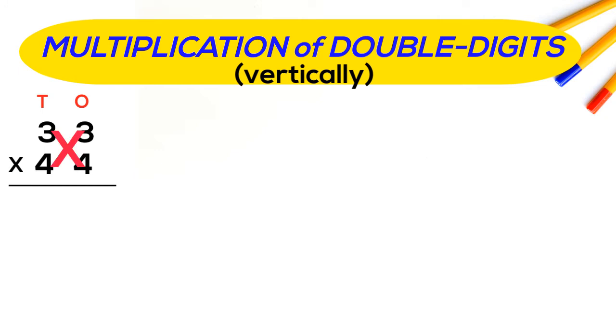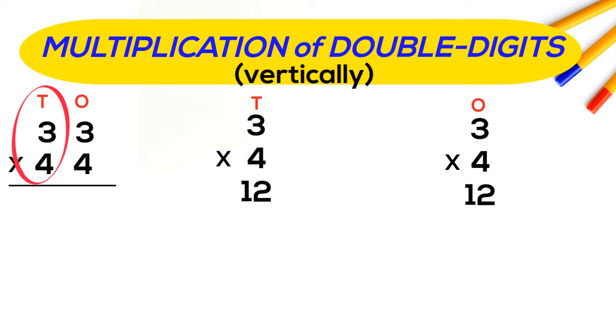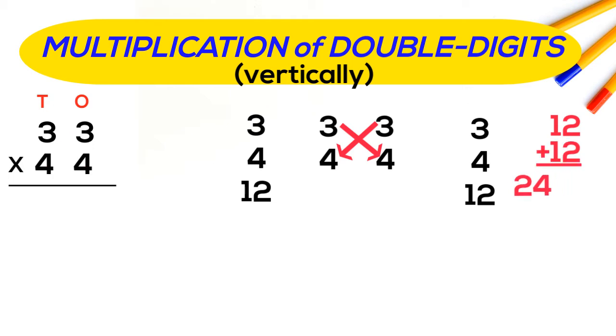Now we will multiply 3 with 4 in one place and write the answer 12. Again multiply 3 into 4 in tens place and write the answer 12. Now for the middle part, 3 will be multiplied with 4 and the answer will get added with the multiplication of 3 into 4.